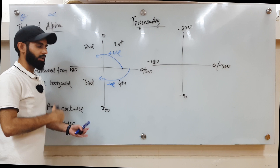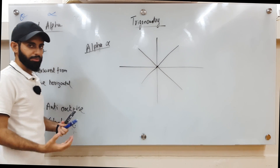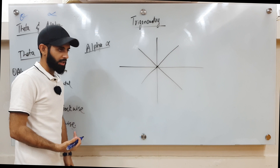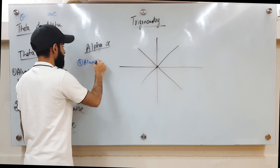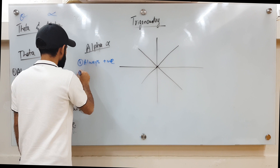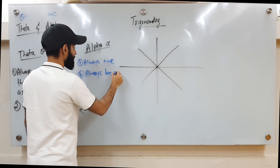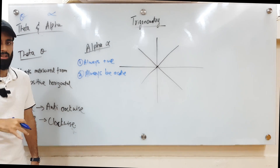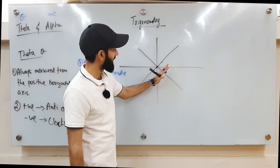Now let's talk about alpha, also known as the basic angle. Alpha is always positive — never negative. It is also always acute, meaning it's always between 0° and 90°.